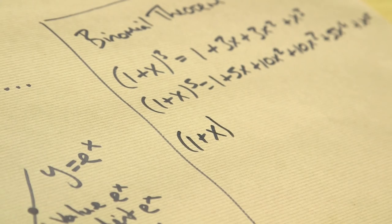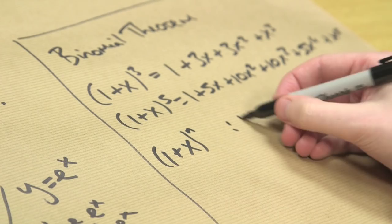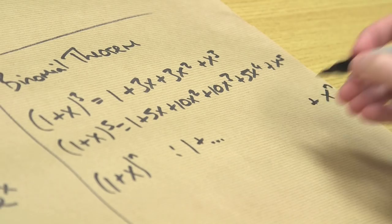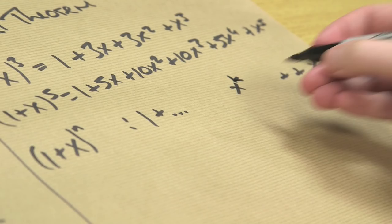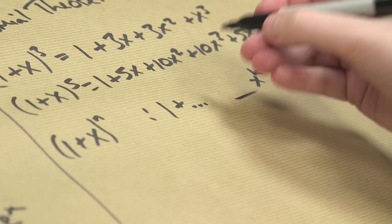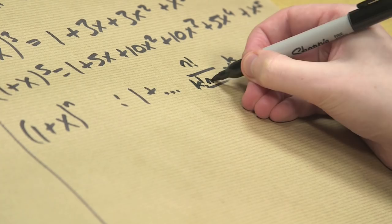In general, the binomial theorem is about having 1 plus x to the power n. If you take a general term, it starts with 1 and ends with x to the n. But in the middle, let's say you take something like x to the k. It has a coefficient in front of it. There's a formula for that. This is the binomial theorem. The formula is n factorial divided by k factorial times n minus k factorial.